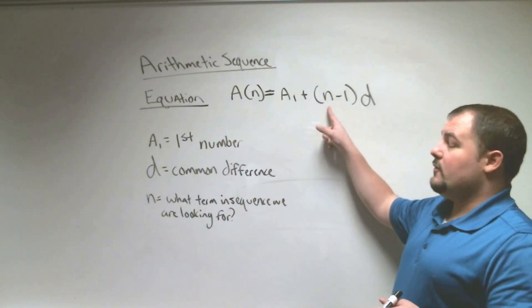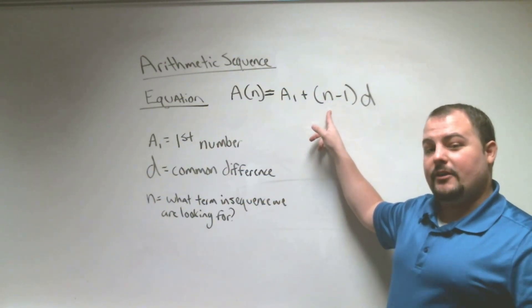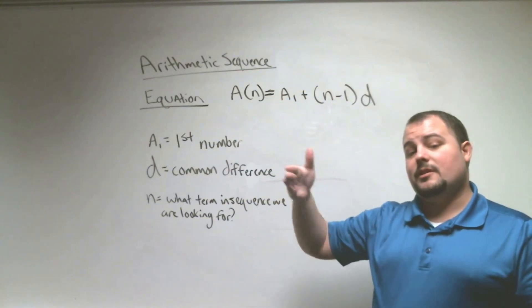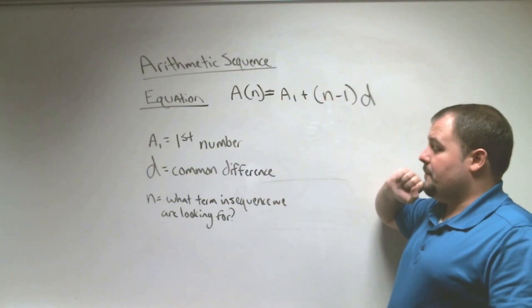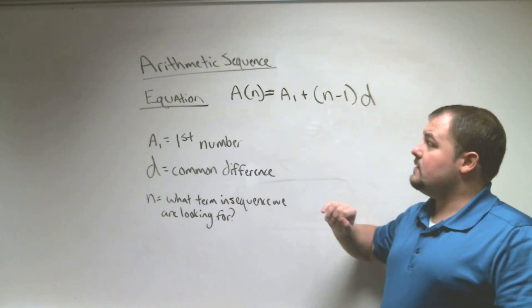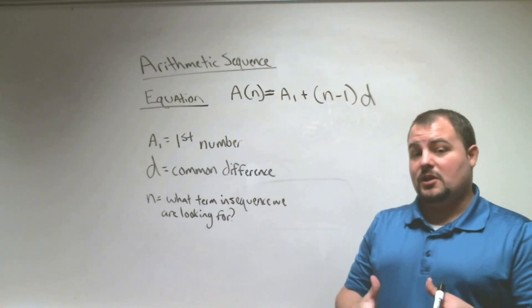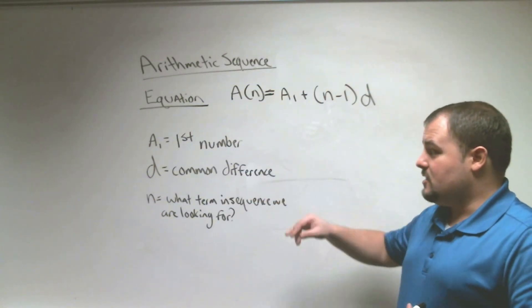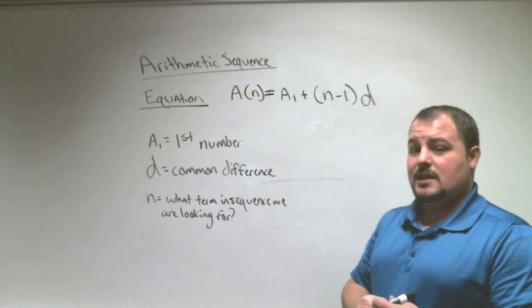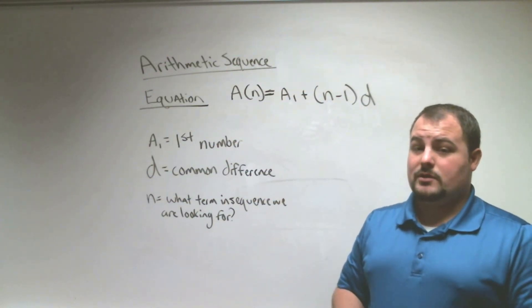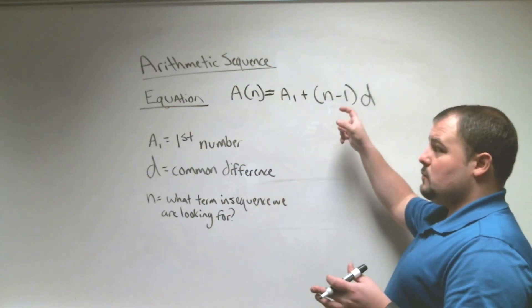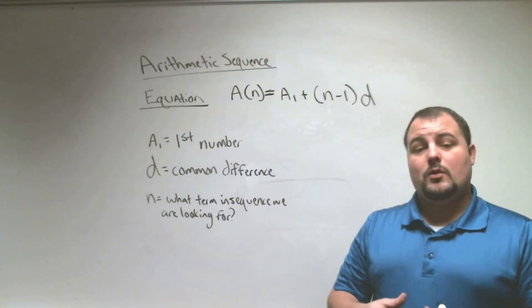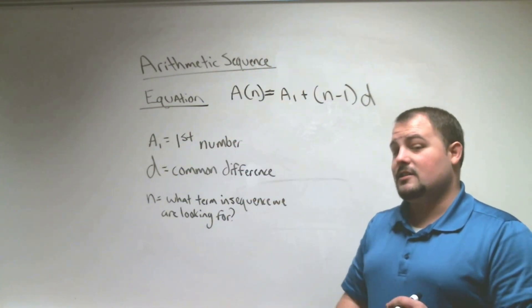N is whatever term we're looking at — whatever place it comes in the pattern. So if it's the third number, that's the third term. D is the common difference. A1 means the very first number in the pattern. When given an arithmetic sequence, we need to establish what the first number is and what the common difference is. The equation is A(n) equals A1 plus (N minus 1) times D — try to memorize this.